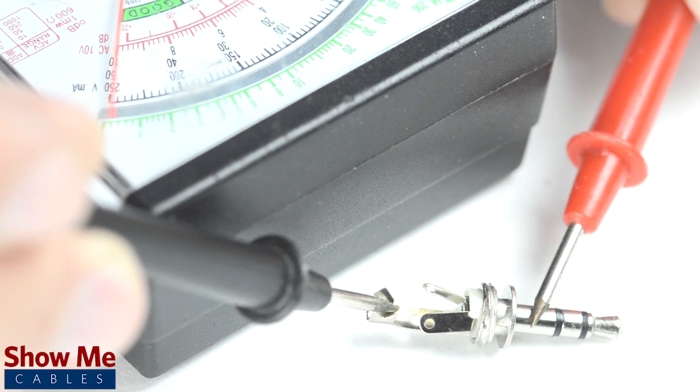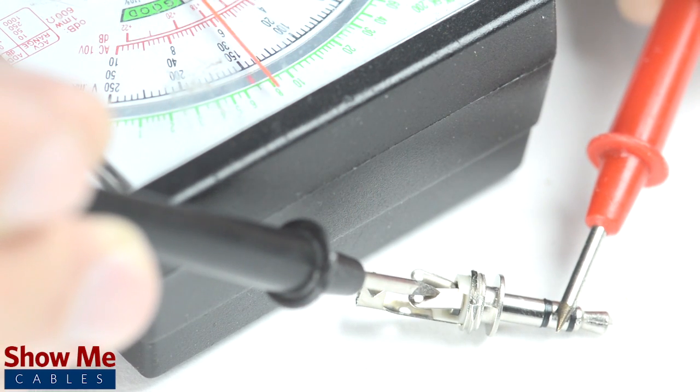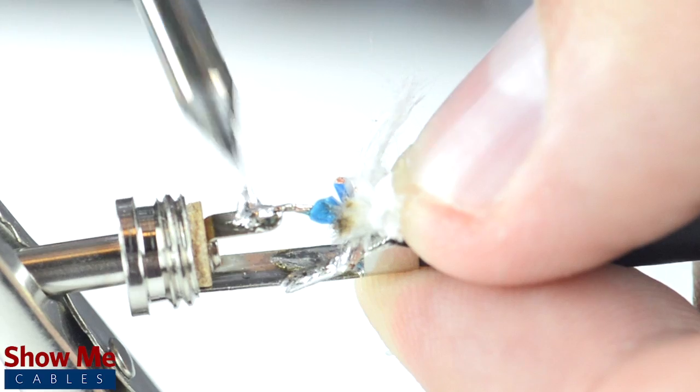You can also use the multimeter to test how the tip, ring, or sleeve relate to the tabs on the back of the connector. Solder the tinned shield to the sleeve and the center conductor to the tip.